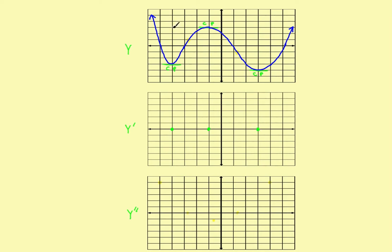That divided things up into intervals. Directly below each critical point, the derivative equals zero, so the first derivative graph goes through zero at each of those points. That gives us four intervals. In the first interval, the original function is decreasing, meaning its slope or derivative is negative, so the first derivative graph is below the axis. In the next interval, the original graph has a positive slope, so the first derivative goes above the axis.